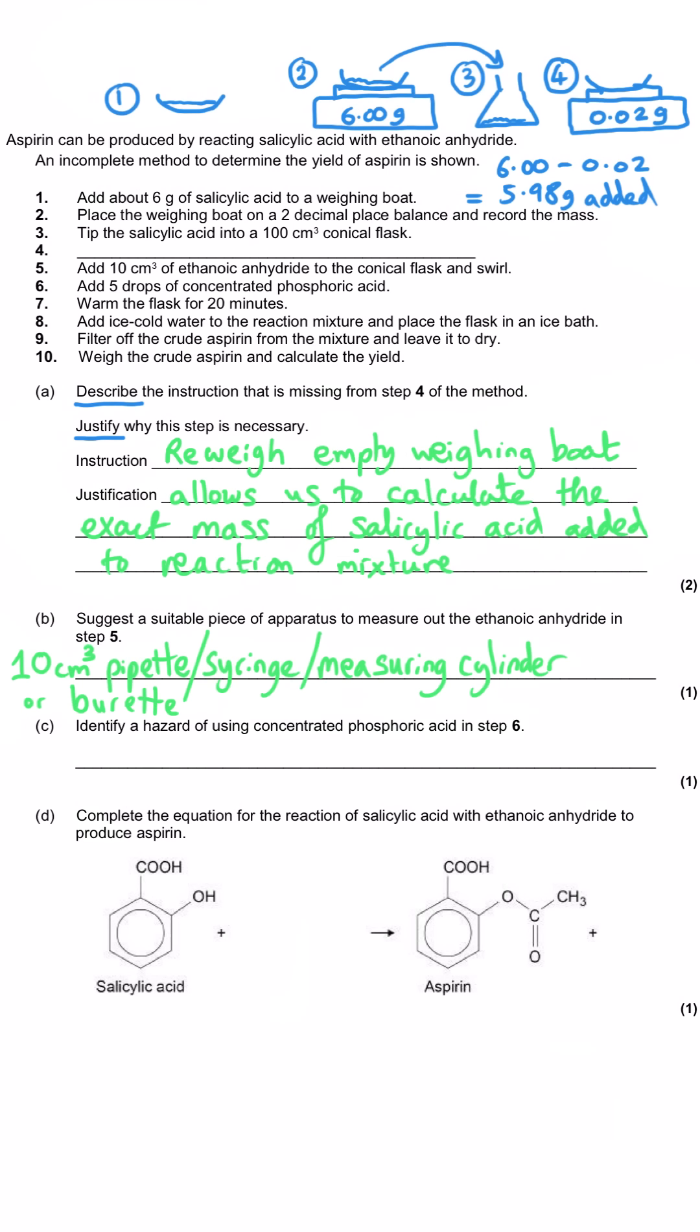Question C moves on to step 6 of the method and says identify a hazard of using concentrated phosphoric acid in step 6. Really it could be concentrated any acid that we are identifying the hazard for and that is corrosive. So that means it will burn the skin or could cause permanent eye damage if we weren't careful and managing that risk suitably. Part D asks us to complete the equation for the reaction of salicylic acid with ethanoic anhydride to produce aspirin.